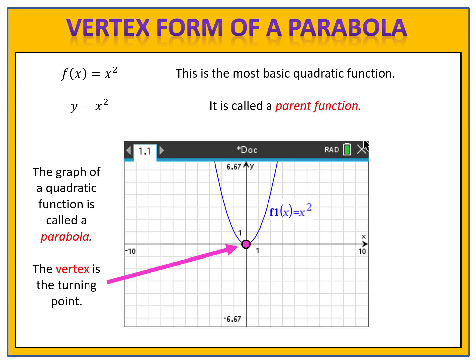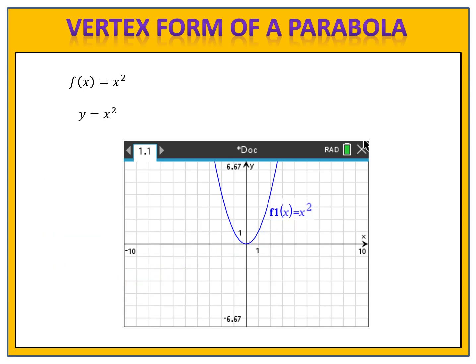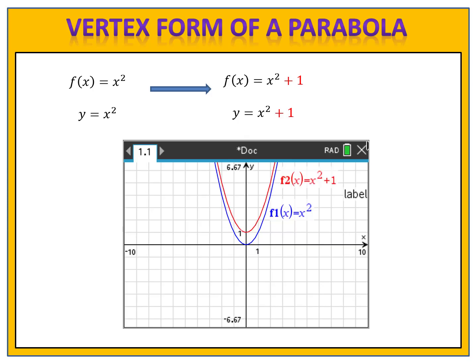To get a better understanding of that, let's get a feel for how this works. Let's begin with our most basic function, f of x equals x squared, and transform it a little bit. Let's change that function to f of x equals x squared plus 1. What happens? Well, let's take a look at the graph. When I graph that new function, I notice that the graph has shifted up one space. When I changed my function from f of x equals x squared to f of x equals x squared plus 1, the parabola shifted up one unit.